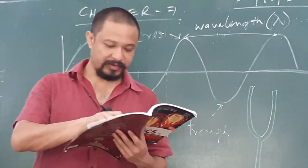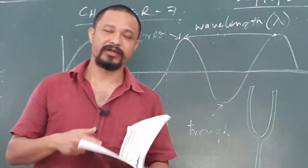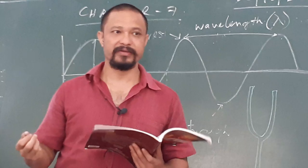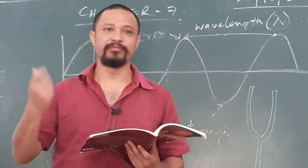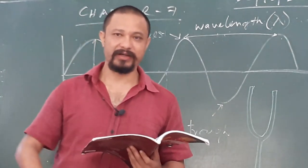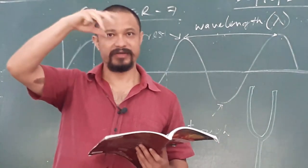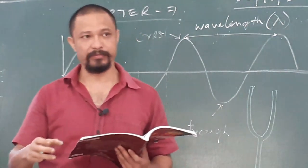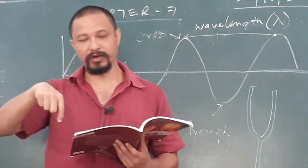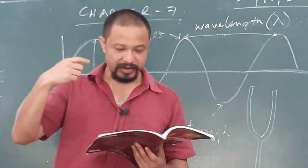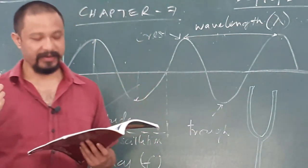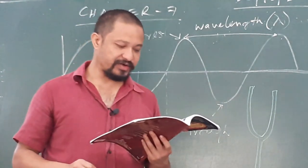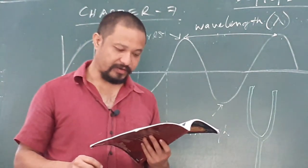Loudness of a sound increases with the increase in the area of a vibrating body. When we strike a small drum and a big drum, the big drum makes a louder noise because the vibrating area is bigger. A smaller drum has a smaller area, so vibration produced will be lesser and the sound will be feebler. Loudness of a sound increases with an increase in the area of the vibrating body.